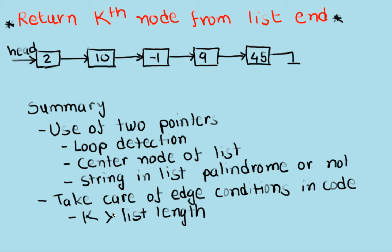To summarize: when the length of a singly linked list is not known, we can use two pointers. Other problems where two pointers apply include loop detection in a singly linked list, finding the center node of a list, and checking whether a string represented as a linked list is a palindrome. We also learned that code must always handle edge cases — in this problem, the case where k is greater than the length of the list. I hope you learned something new today, thank you for watching.